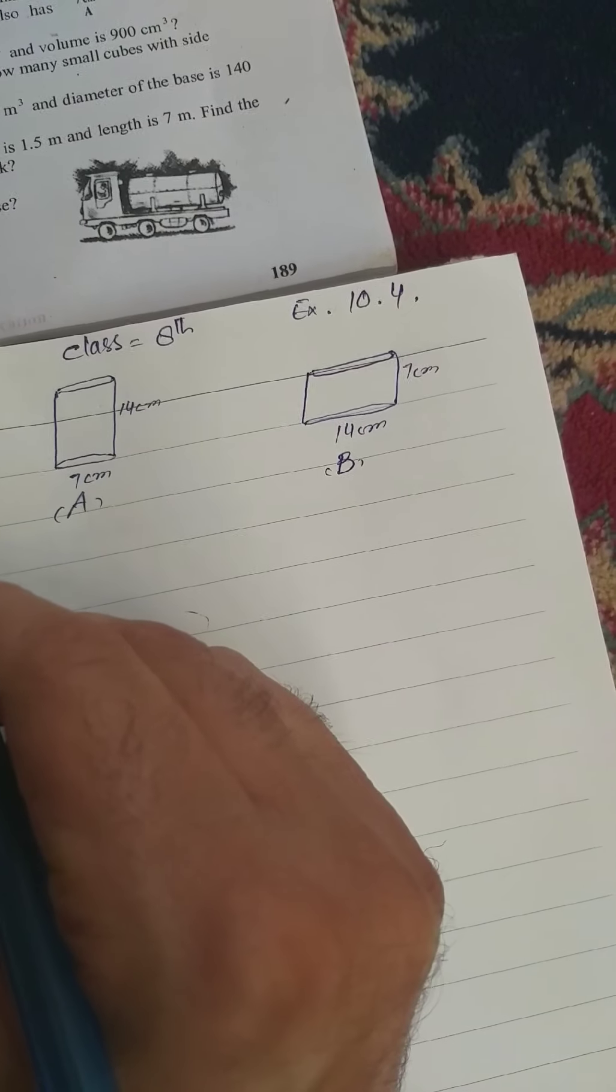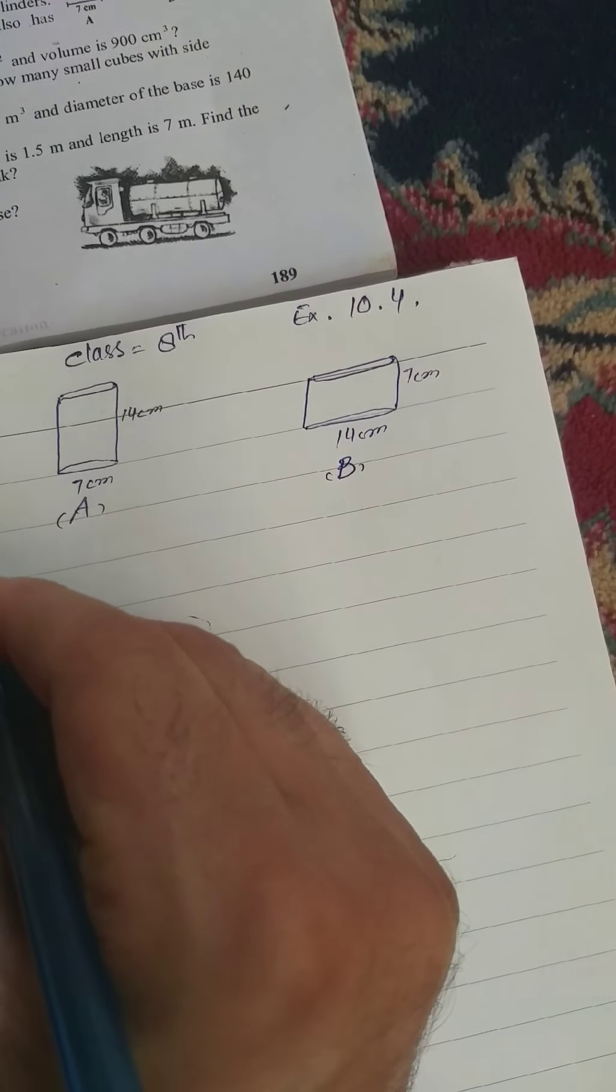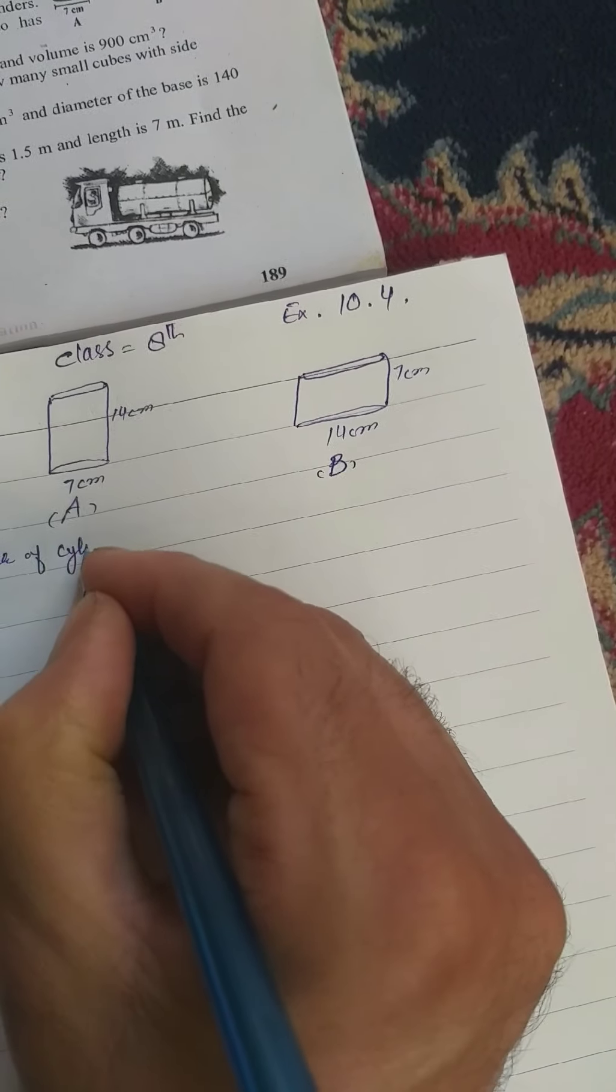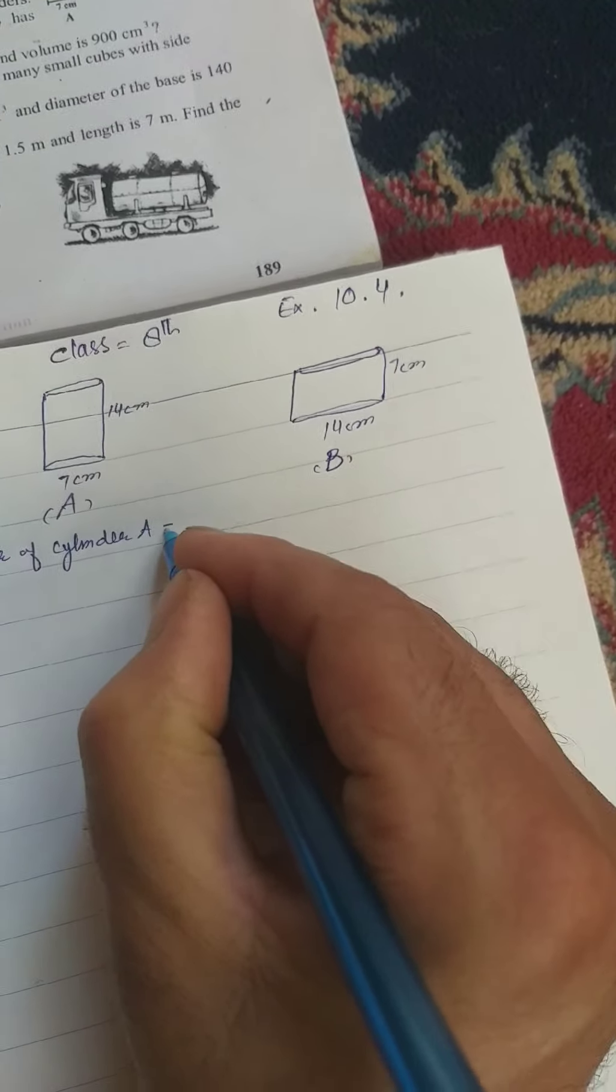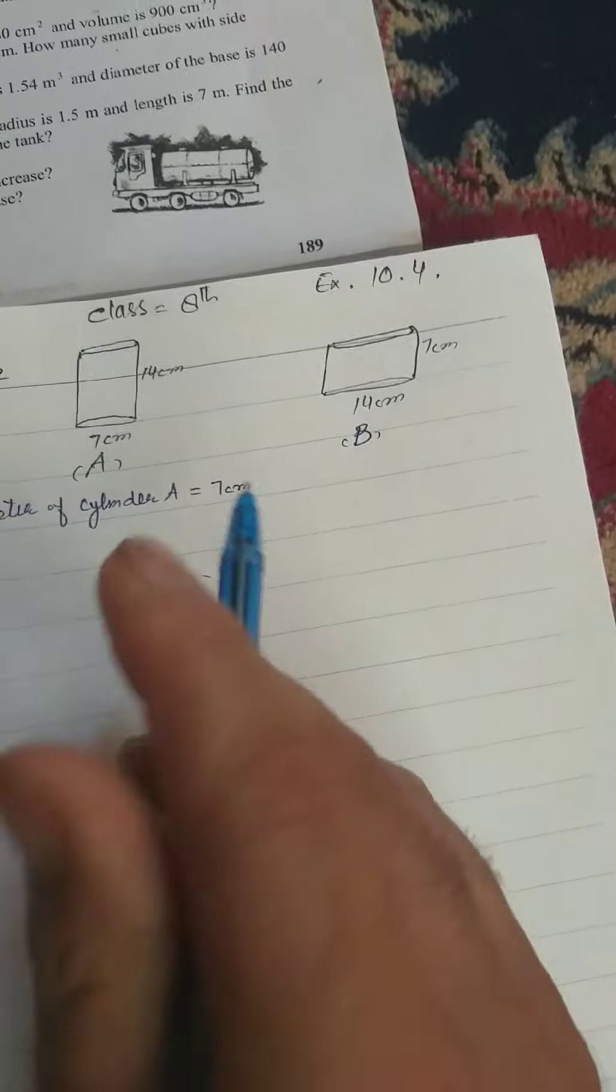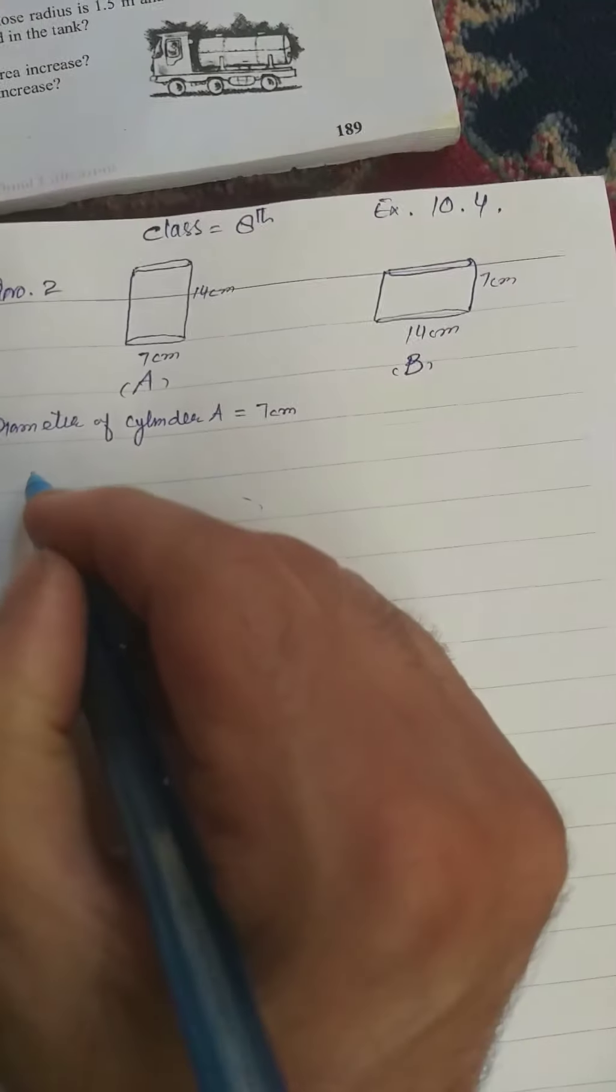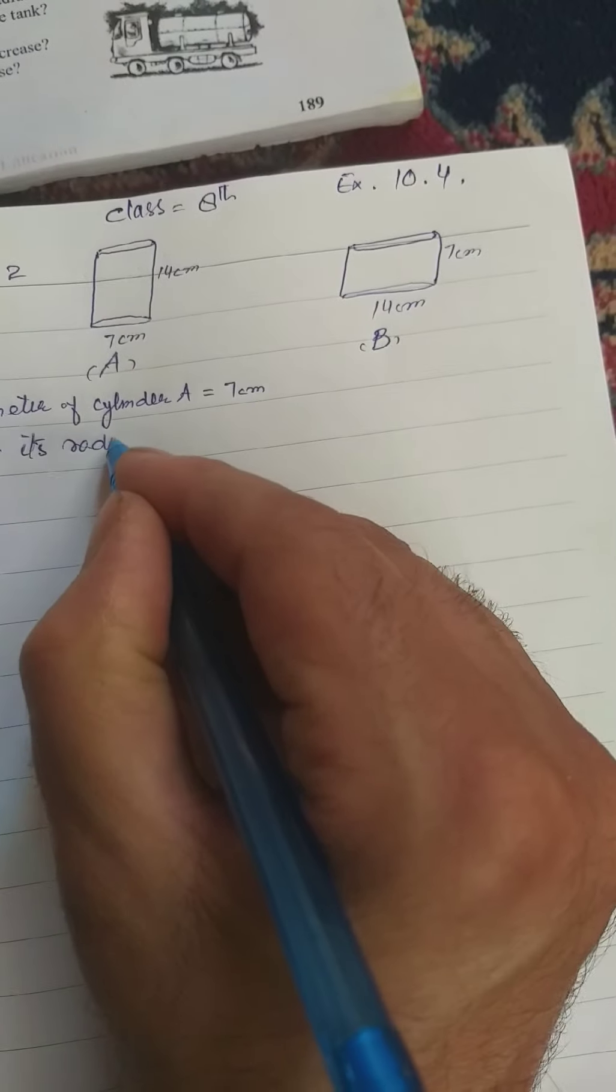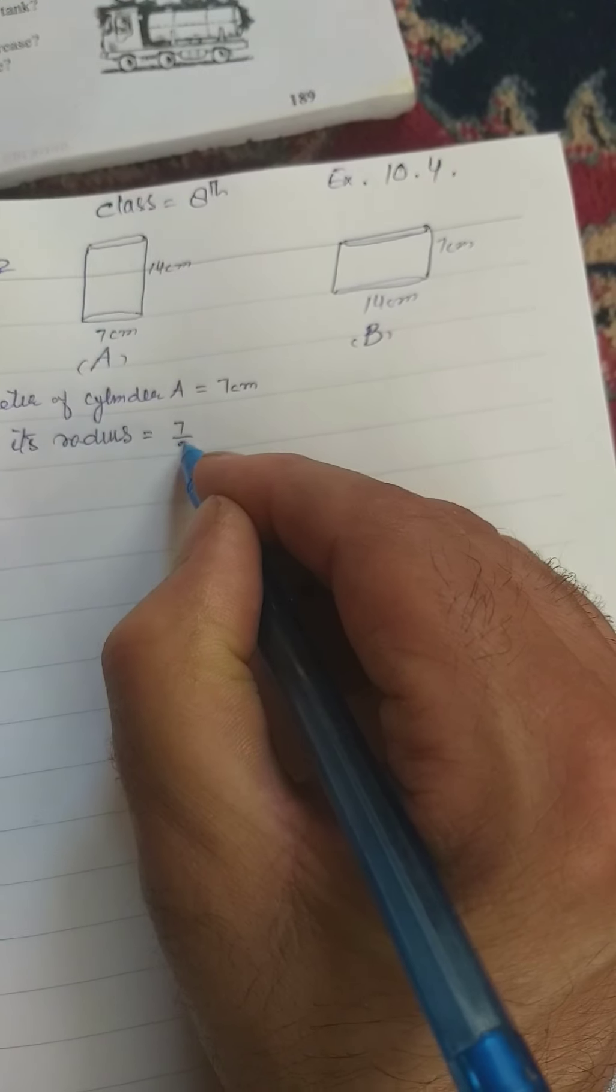Cylinder A, diameter of cylinder A is 7cm. If diameter is 7cm, therefore its radius is 7/2 cm.